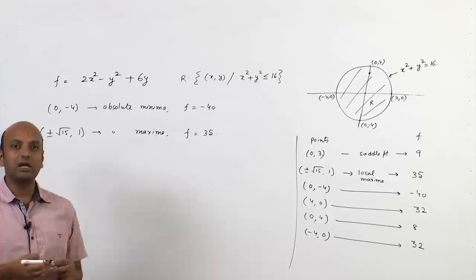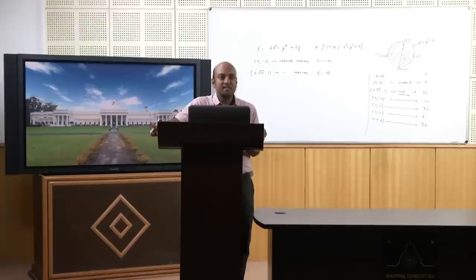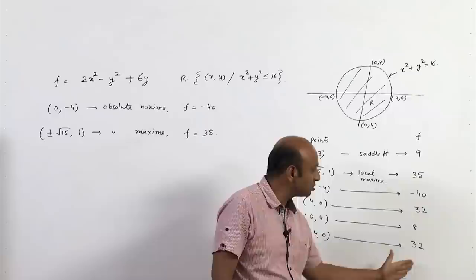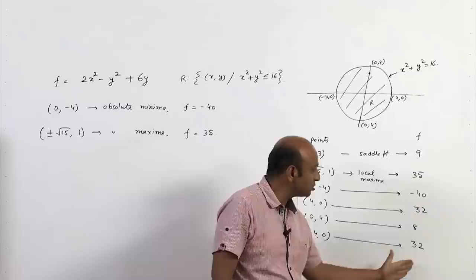So (0,-4) is the point of absolute minima with absolute minimum value -40, and (±√15, 1) are points of absolute maxima with maximum value 35. That is how we find absolute maxima and absolute minima of a function on a closed bounded region: find interior critical points, move along the boundary, list all functional values, and identify the extremes.